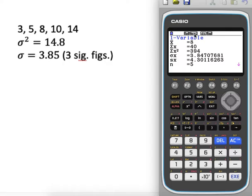So if I press one variable, there we go. You see here your standard deviation is 3.847 or 3.85 to 3 significant figures.